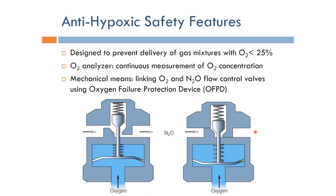In this case, we will never have a situation where the nitrous oxide pressure is higher than the oxygen pressure. Whenever this happens, the patient is ventilated using regular air, which is safer than having a hypoxic mixture going through the breathing circuit.